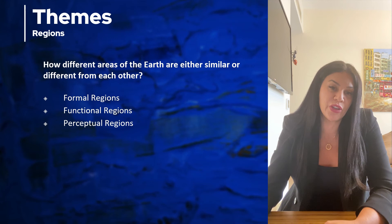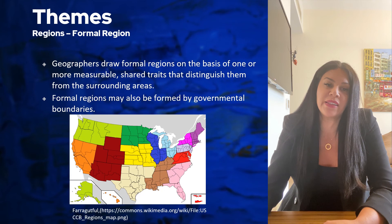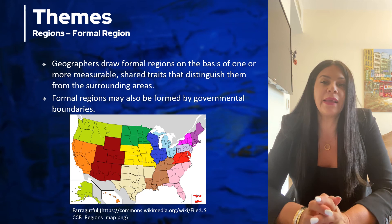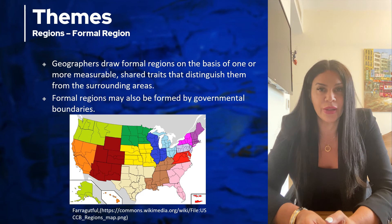With both physical and human characteristics, we use the theme of geography: place. There are three types of regions: formal region, functional region, and perceptual region. A formal region is defined as a connected area that has one or more measurable characteristics. For example, the desert is a formal region because within the desert, it shares all the same types of characteristics.